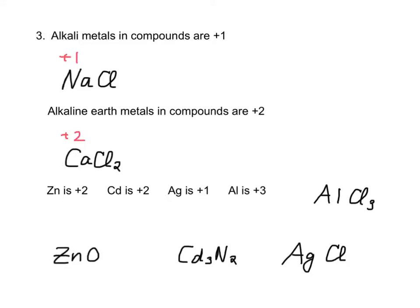And then there's a few that always have the same oxidation number. We've seen them before. These are the transition metals that don't have a Roman numeral. Zinc is +2, cadmium is +2, silver is +1, aluminum is +3.